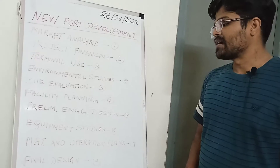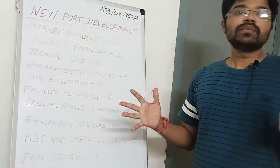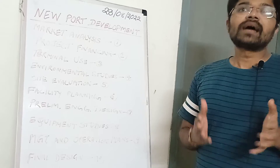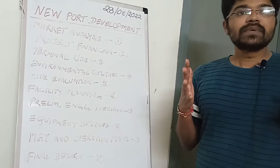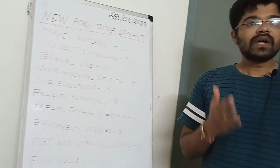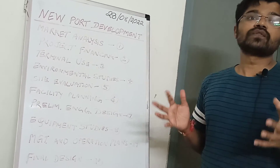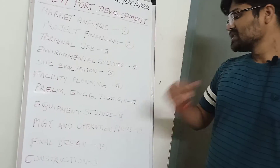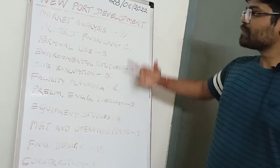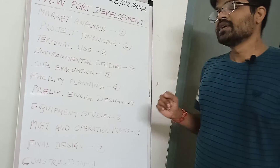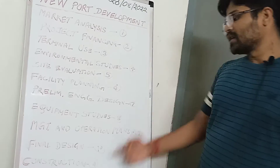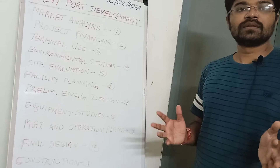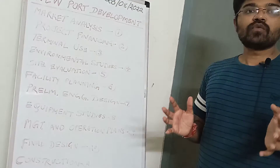Tenth is the final design — this determines what the final design of the port will look like, where vessels will berth, and where cargo storage will take place. Eleventh is construction — once all 10 prior phases are evaluated and planned, construction of the port begins and the development of the new port proceeds.